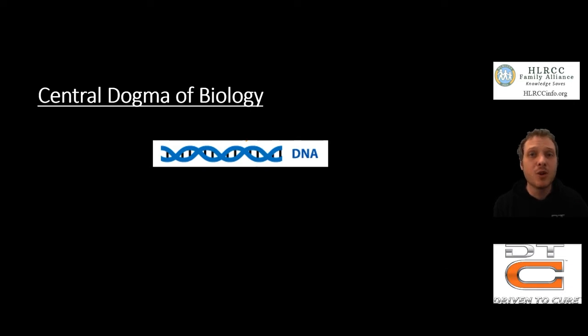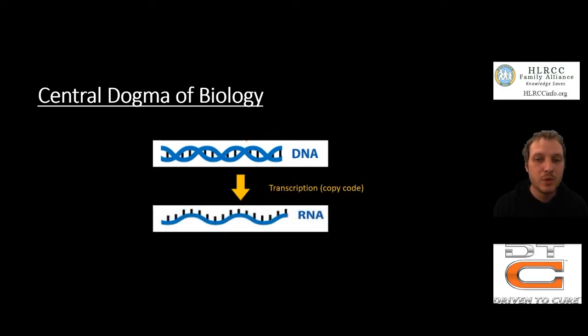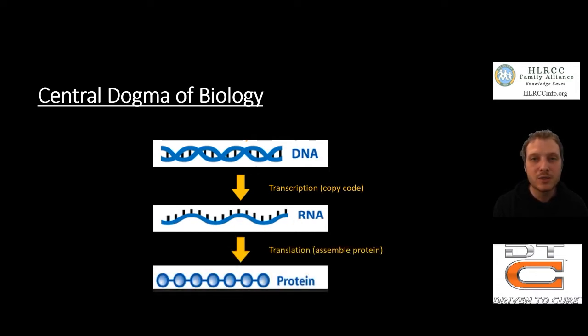When we look at the overall picture, we have what's called the central dogma of biology. That means every cell that we know of goes through this process where we start with the DNA and then we make our copy through a process called transcription. Then we have our single strand of RNA, and this RNA is read by those ribosomes and we translate that code into our actual protein. So it's always going to go in this order.